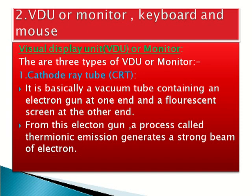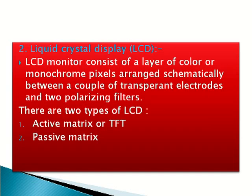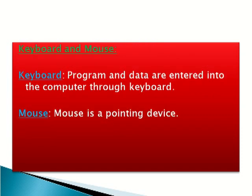The second component of computer is the visual display unit, VDU, or monitor, along with keyboard and mouse. There are three types of VDU or monitor: CRT or cathode ray tube, LCD or liquid crystal display (which has two types: active matrix or TFT and passive matrix), and LED which stands for light emitting diode. Keyboard is a device through which programs and data are entered into the computer. Mouse is a pointing device and also an input device.